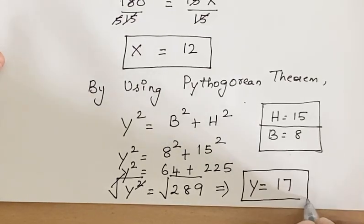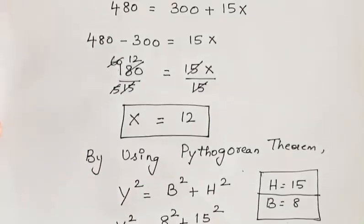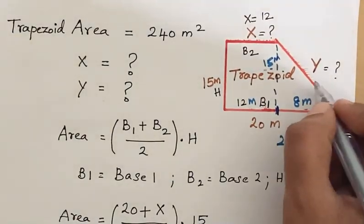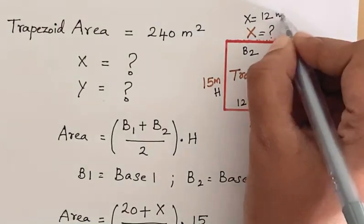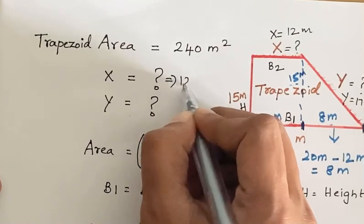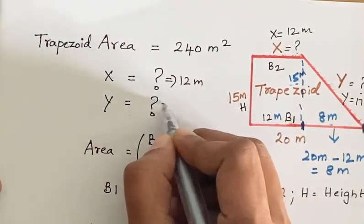So we get the value of y is 17 meters and x is 12 meters. The value of x is 12 meters and y is 17 meters.